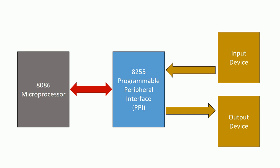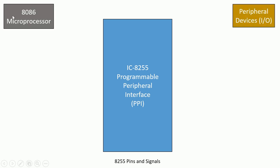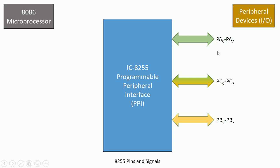IC8255, the Programmable Peripheral Interface, is a 40-pin IC. It consists of three bi-directional I/O ports: Port A, Port B, and Port C. Each of them is 8 bits in size — Port A is bits 0 to 7 (8 bits), Port B is also 0 to 7 (8 bits), and Port C is also 0 to 7. Each port is bi-directional because each can be attached to either an input device or an output device. Port A is green in color, Port B is yellow, whereas Port C is a mix.